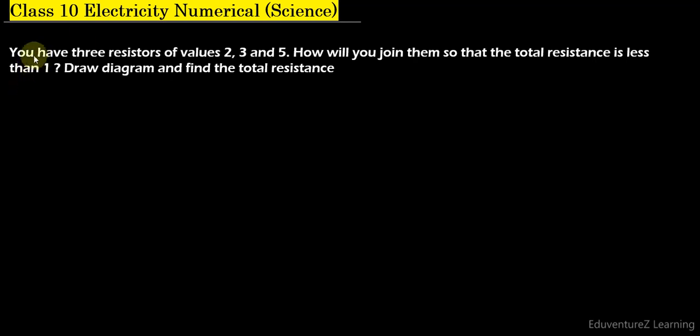Hello students, here is a question which says: you have three resistors of values 2 ohm, 3 ohm, and 5 ohm. How will you join them so that the total resistance is less than 1 ohm? Draw a diagram and find the total resistance.